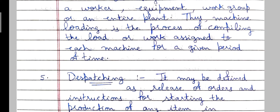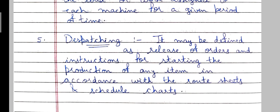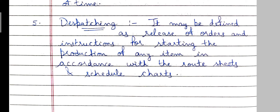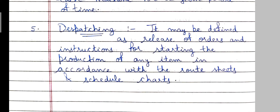The second main function of PPC is production control functions, and the first under this is dispatching. Dispatching may be defined as the release of orders and instructions for starting the production of any item in accordance with the route sheets and schedule charts. After deciding the sequence, schedule, and machine assignments, you release orders so that workers can start the work.